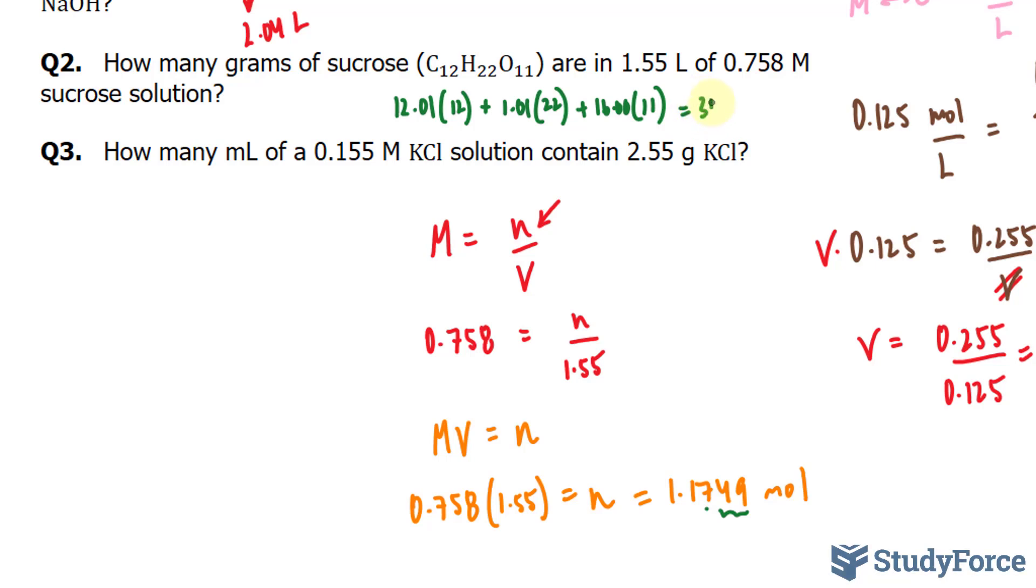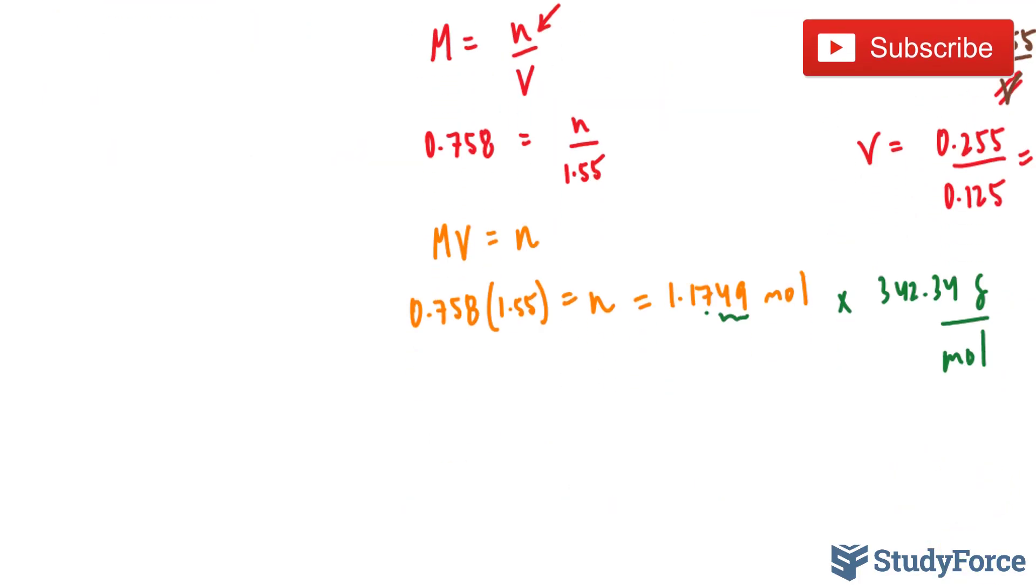So what I'll do is take this number and multiply it by 342.34 grams per every one mole. And notice what this will do: the mole units here and the mole units here will cancel out, leaving us with only grams.